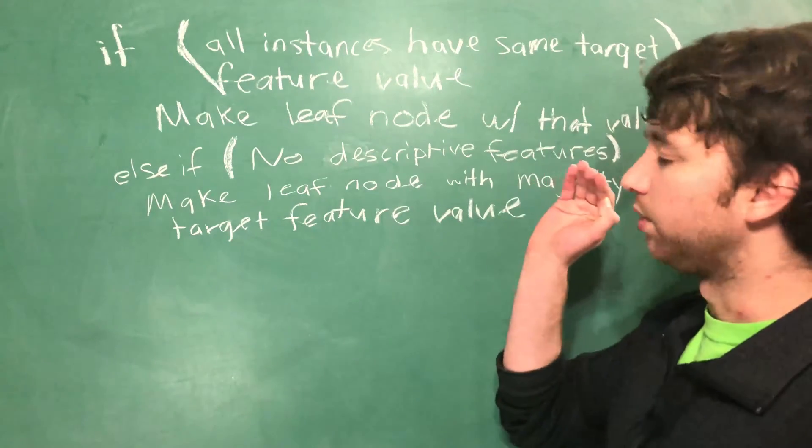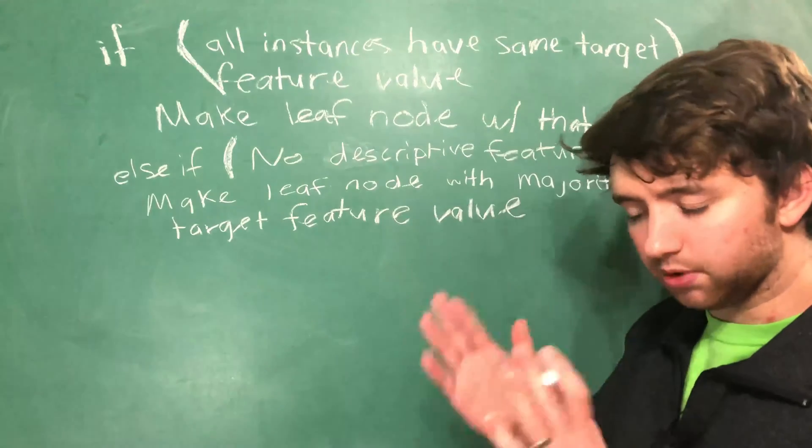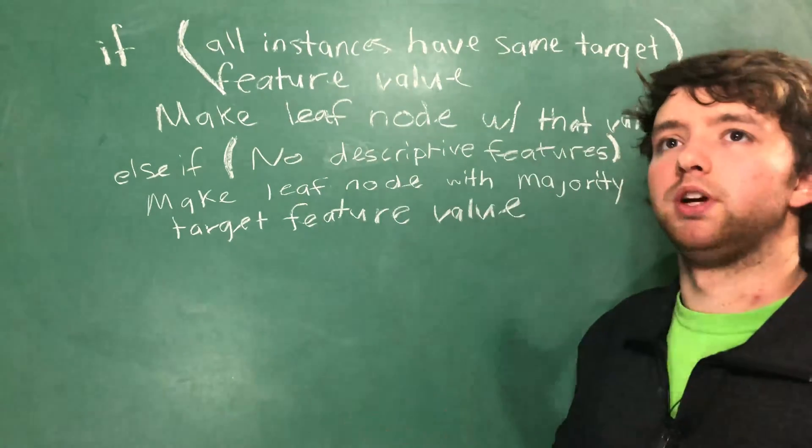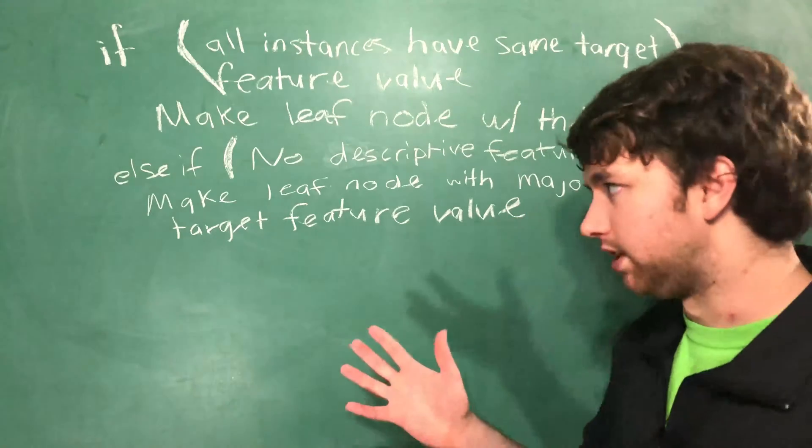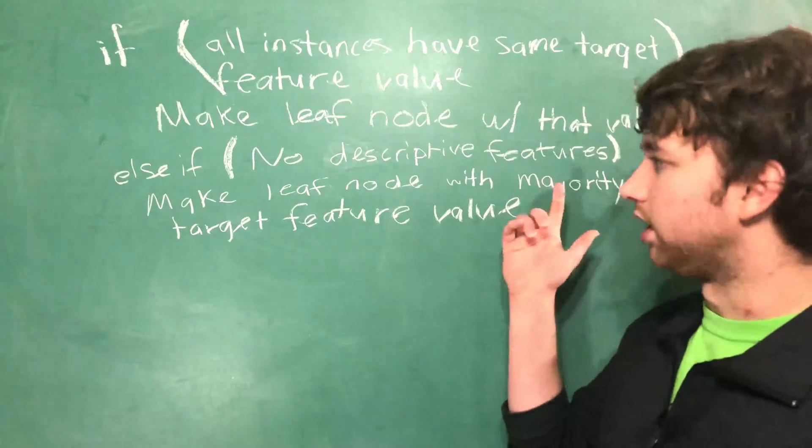If we are out of descriptive features to split our data on and we end up with a group with some people having diabetes and some people not having diabetes, we take the majority target feature value.